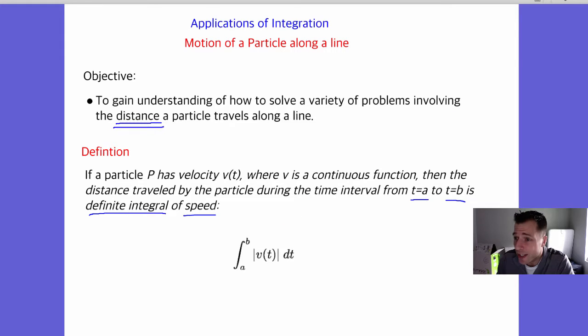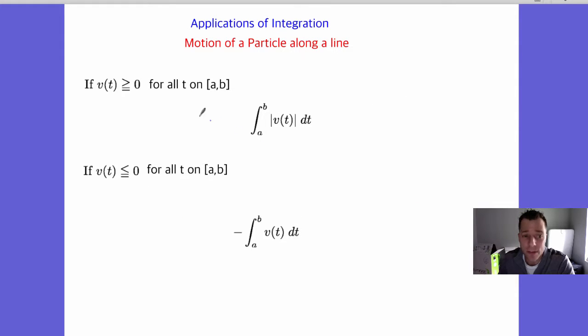So a couple things to consider. What happens if your velocity function is greater than or equal to zero for all your values on a to b? It never is negative. So the idea here is you can rewrite that integral instead of using absolute values. Well, if you always know your function's positive, you can just take the integral of v(t) dt and just ignore the absolute value.